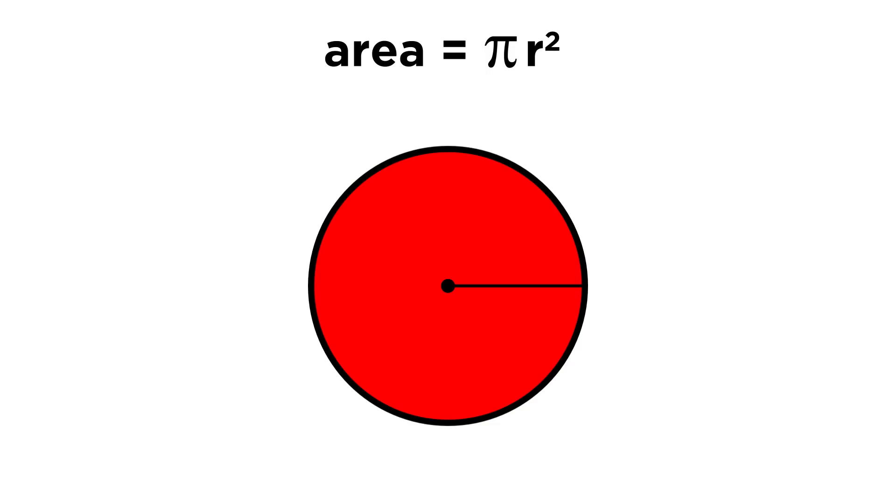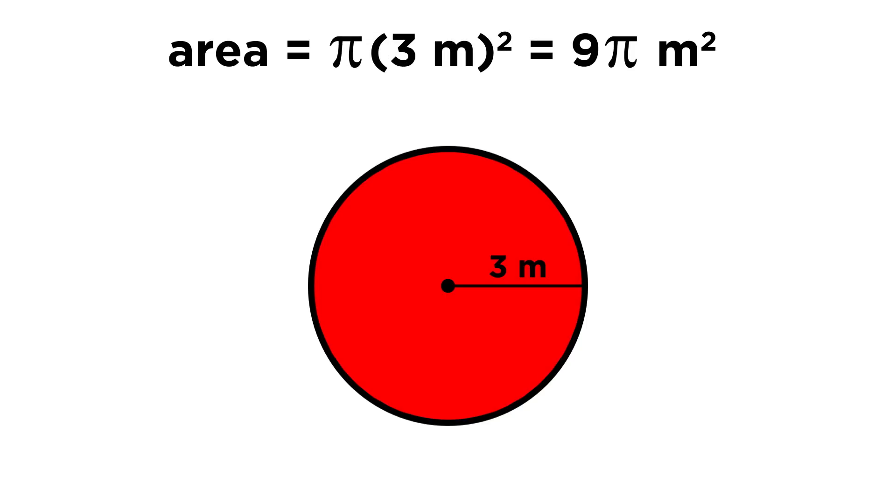With circles, things are a bit different. The area for a circle is given by pi r squared, or pi times the radius squared. So if a circle has a radius of three meters, the area will be nine pi square meters.